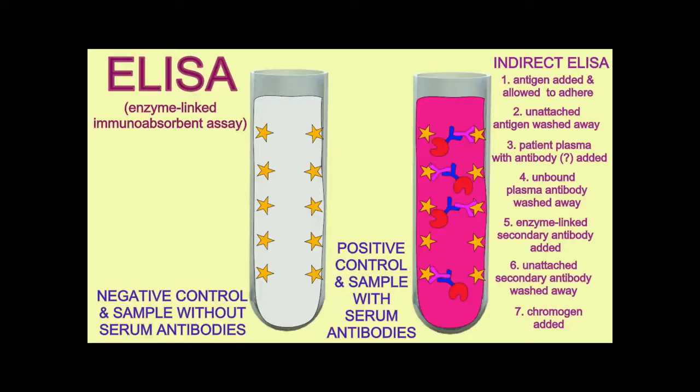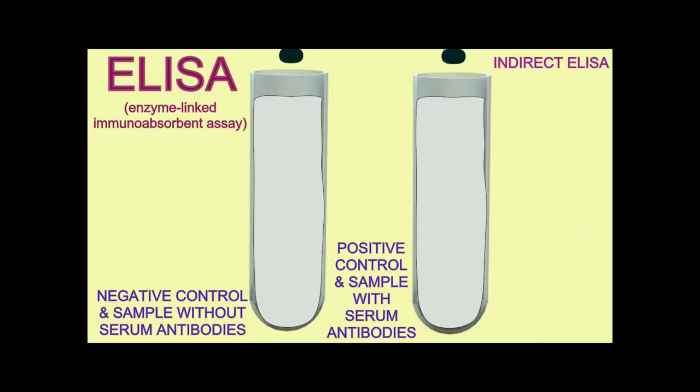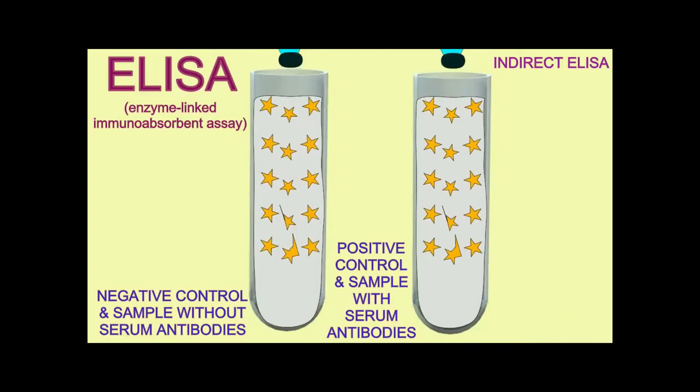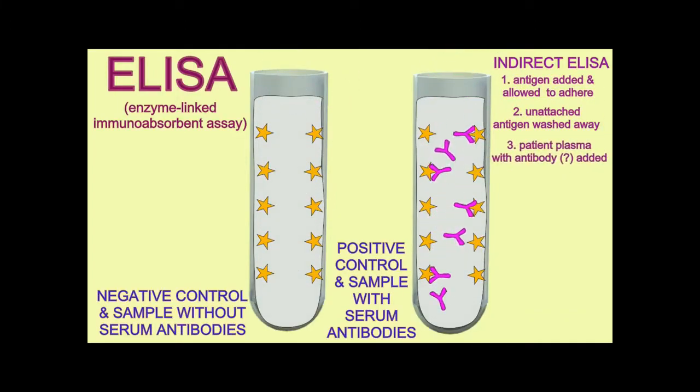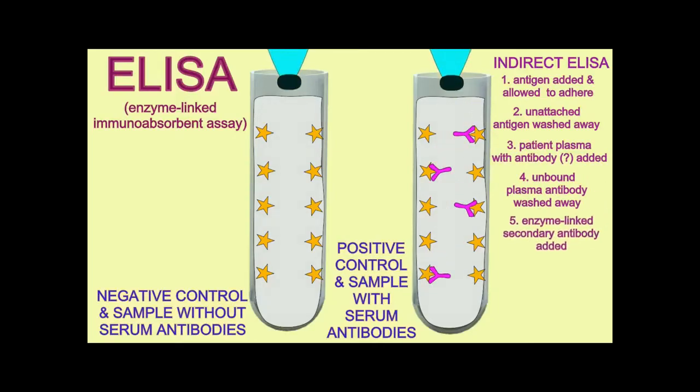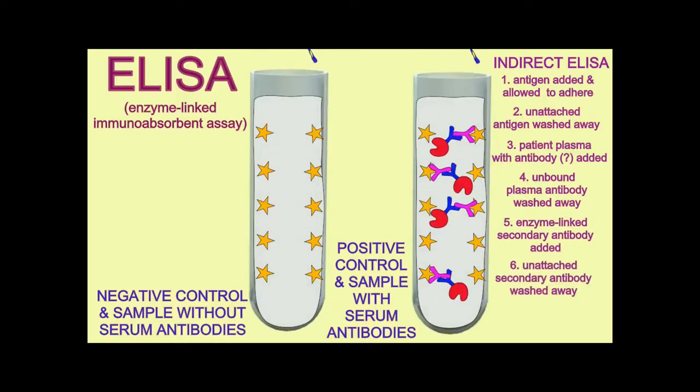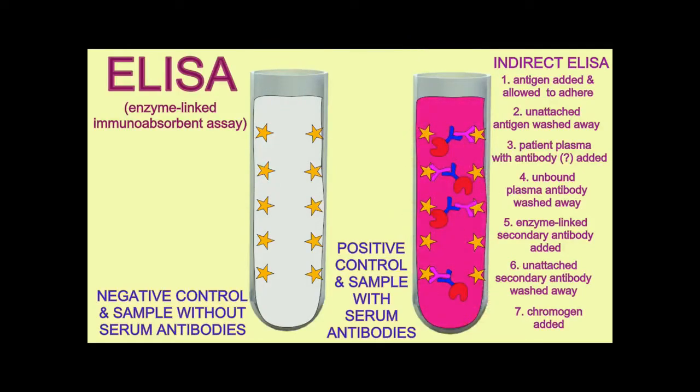Then a second antibody which has the enzyme attached is added. This antibody binds to antibodies that the patient might have produced against coronavirus, and then the resultant color change shows that the patient had antibodies against coronavirus, thus indirectly detecting the presence of coronavirus.